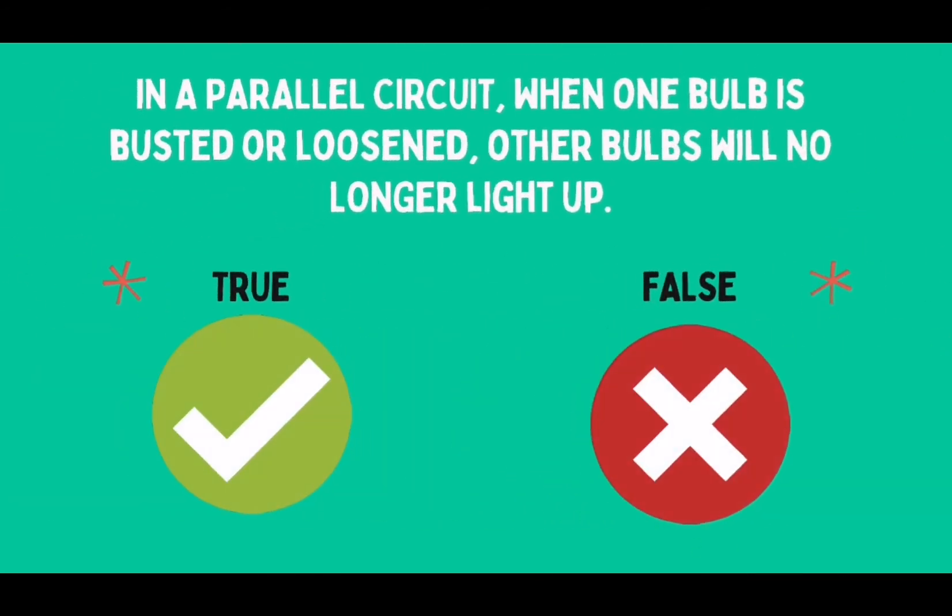In a parallel circuit, when one bulb is busted or loosened, other bulbs will no longer light up.